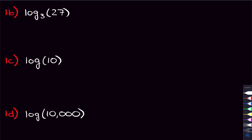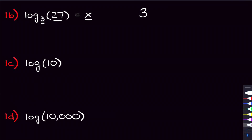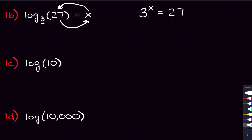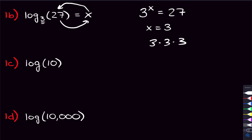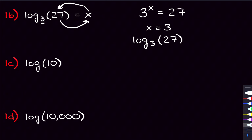Moving on to log base 3 of 27. Again, we don't know what this is, so we set it equal to x. The base of our log — 3 — becomes bigger. The x comes over to the left as the power on 3, and 27 goes to the other side. What we're asking is: 3 to what power equals 27? Well, 3 to the 3rd power — 3 times 3 times 3 — is 27. So log base 3 of 27 is equal to 3.